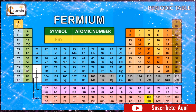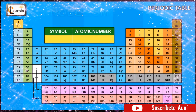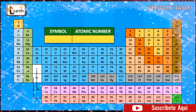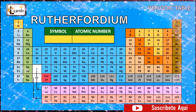The element fermium is represented as Fm and has an atomic number of 100. The element mendelevium is represented as Md and has an atomic number of 101. The element nobelium is represented as No and has an atomic number of 102. The element lawrencium is represented as Lr and has an atomic number of 103. The element rutherfordium is represented as Rf and has an atomic number of 104.